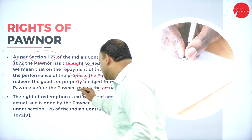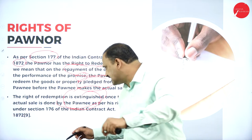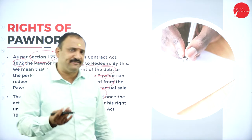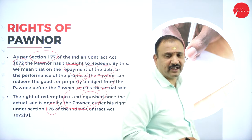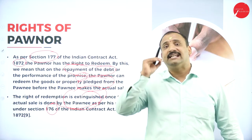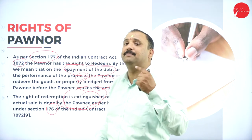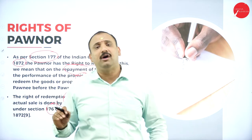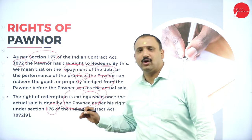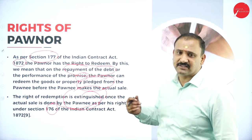The pawner or pledger will have the right to take back the goods after making payment of the debt before the pawnee makes an actual sale. The right of redemption is extinguished once the actual sale is done by the pawnee as per his right under Section 176. Once the goods are sold outright in the market, the pawner will not have any right of redemption anymore.